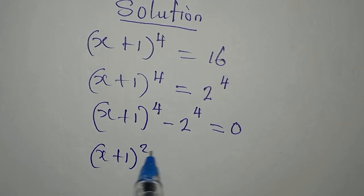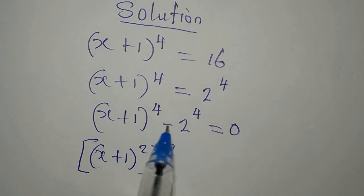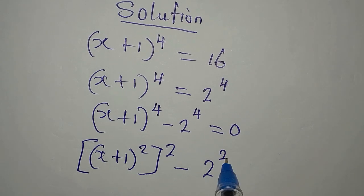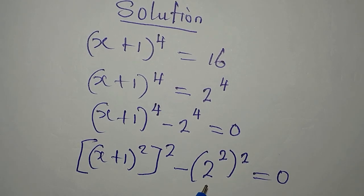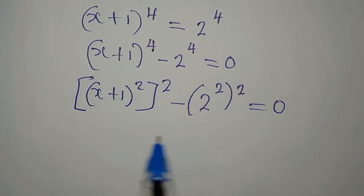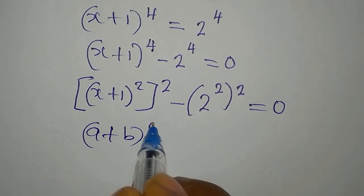Now x plus 1 to the power of 4 can be written as x plus 1 squared, to the power of 2, and similarly 2 to the power of 4 is 2 squared, to the power of 2 — because we multiply the exponents to get back the 4. Everything equals 0, so here we can apply the difference of two squares.